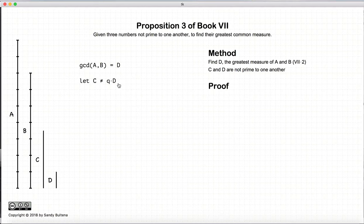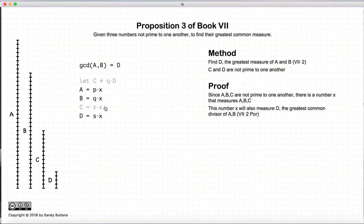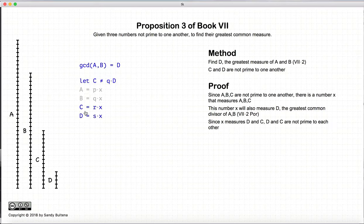So let's prove that C and D are also not prime to one another. Since A, B, and C are not prime to one another, there's a number X which measures A, B, and C — by definition, and X is not equal to 1. Now if X measures A and B, then again by the porism of Proposition 2, it must also measure their greatest common divisor, so it must also measure D. Now we have that X measures C and D, and X is not equal to 1, so therefore C and D are not prime to one another.